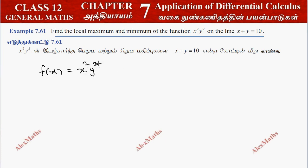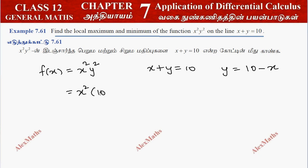In the single variable, we use the condition x plus y is equal to 10, so y equals 10 minus x. This gives us f of x equal to x squared times 10 minus x whole squared.